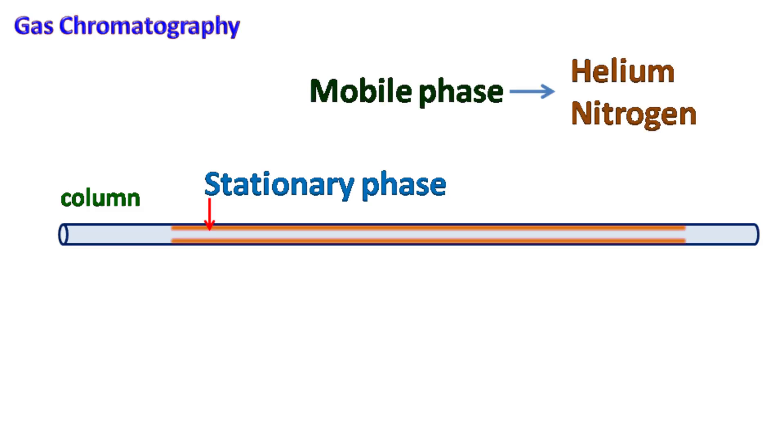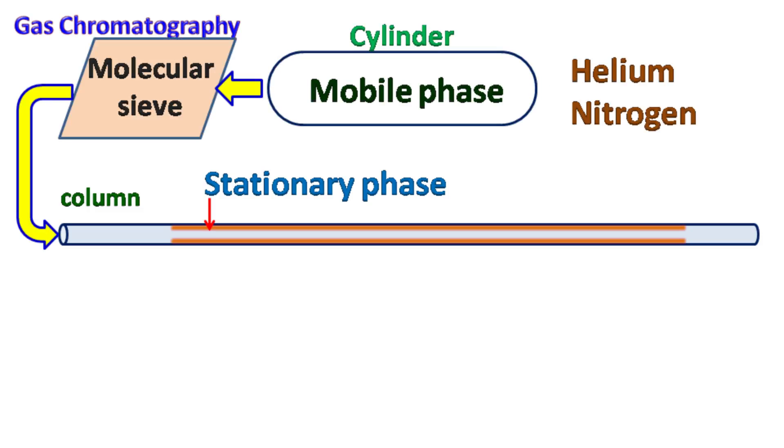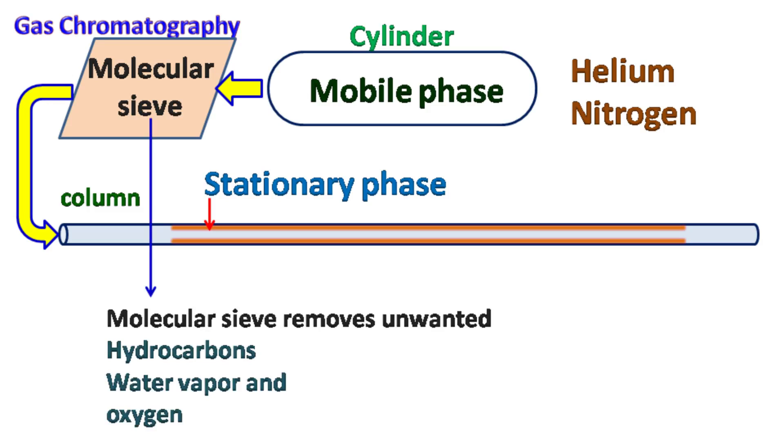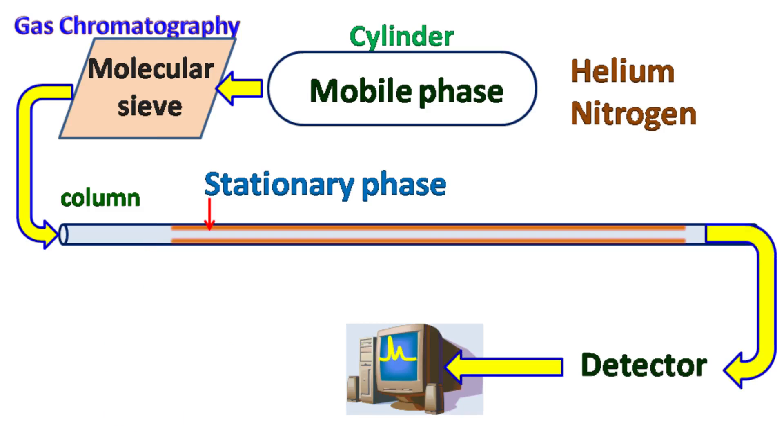The mobile phase gas is kept in a cylinder which is connected with the column via molecular sieve. The molecular sieve separates the unwanted hydrocarbons, oxygen, and water vapor that may interfere with the test sample during analysis. At the end of the column there is a detector which detects the sample.